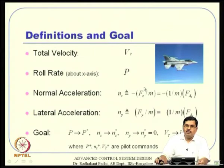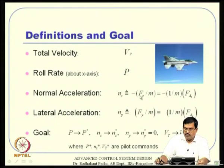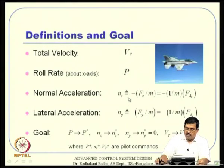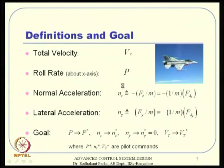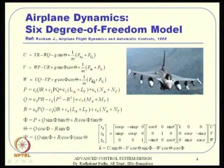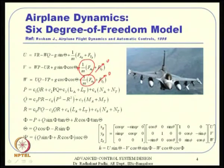The problem involves tracking total velocity vt, roll rate p, and normal acceleration nz, defined as negative fz over m. The thrust acts primarily in the x-direction, so there is no thrust in y and z directions. Normal acceleration nz and lateral acceleration ny are defined as external force components divided by mass. The negative sign for nz arises because the body frame z-axis points downward, so positive normal acceleration means the aircraft goes up.